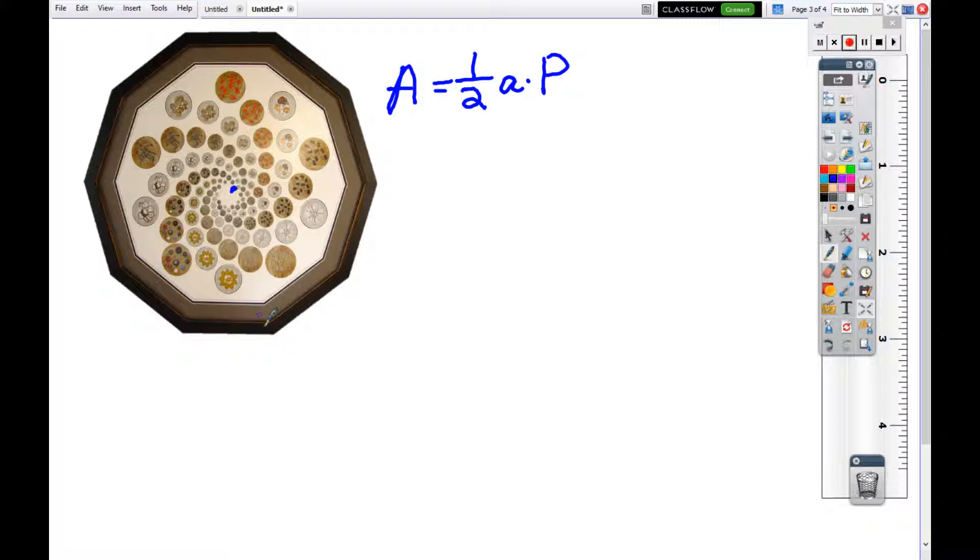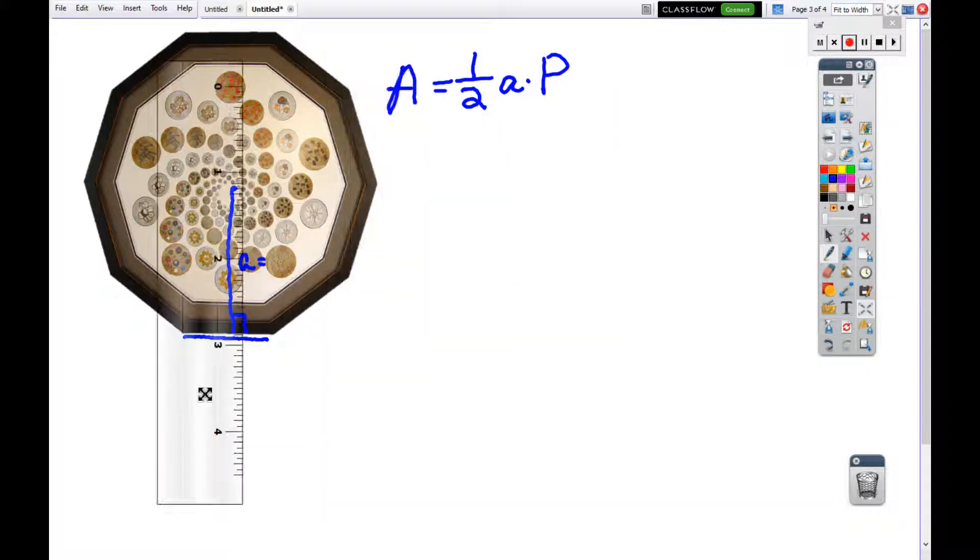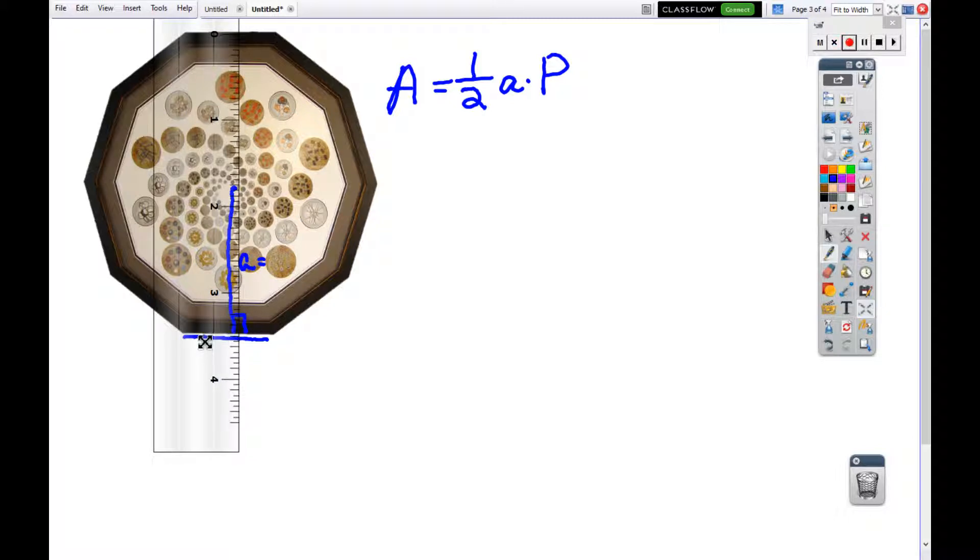The center of the polygon to one of its opposite edges creating a 90 degree angle is the apothem, so we're going to have to find this. We're going to grab the ruler and measure this. As we can see, it comes out to about 3.5 inches.